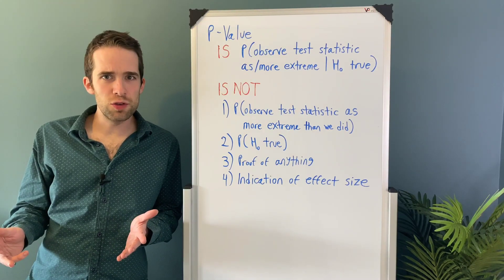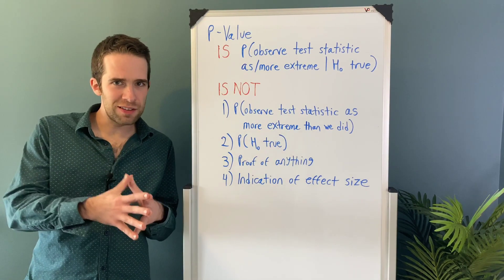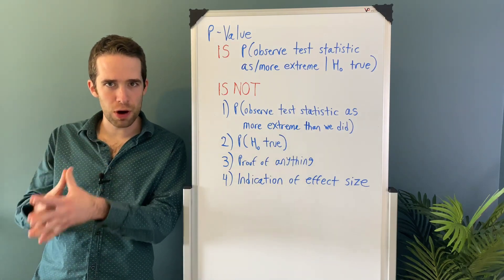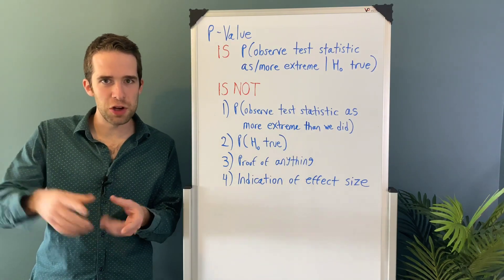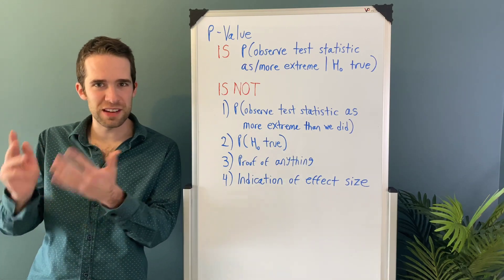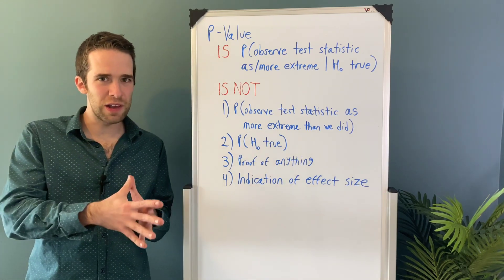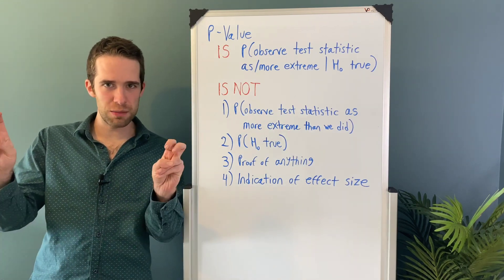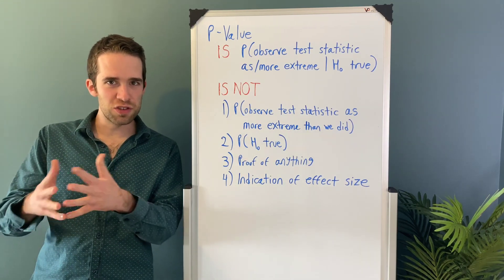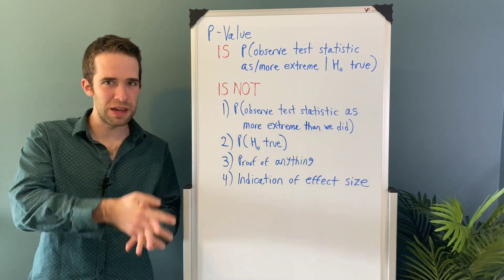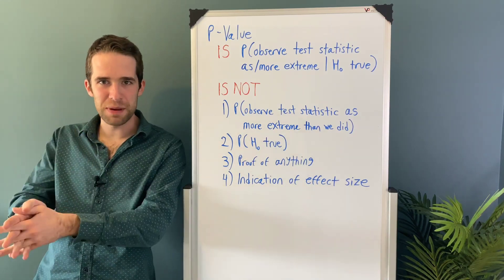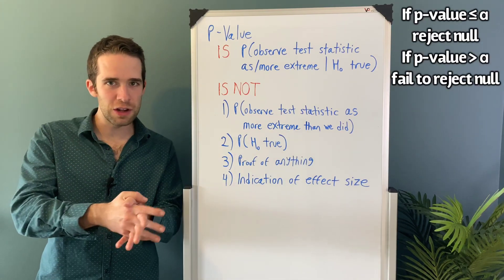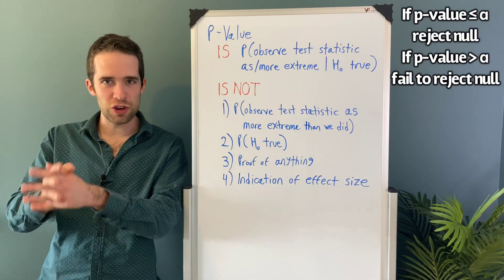In my last video in the statistics tutorial series, I outlined the hypothesis testing framework and the various steps that go into these problems. You start by defining a null and alternative hypothesis as well as picking a significance level. Then you calculate a test statistic which basically summarizes how extreme your data is. You'll use the distribution of that test statistic to calculate a p-value, and then you compare that p-value to your significance level. If the p-value is lower than your significance level, you reject the null hypothesis.